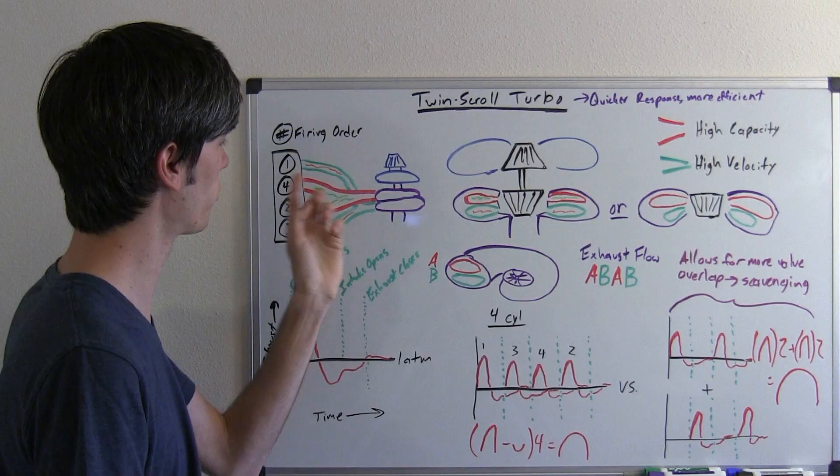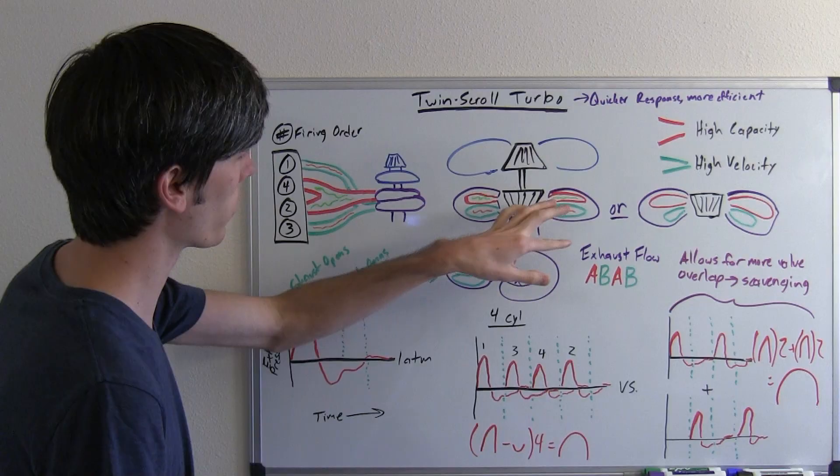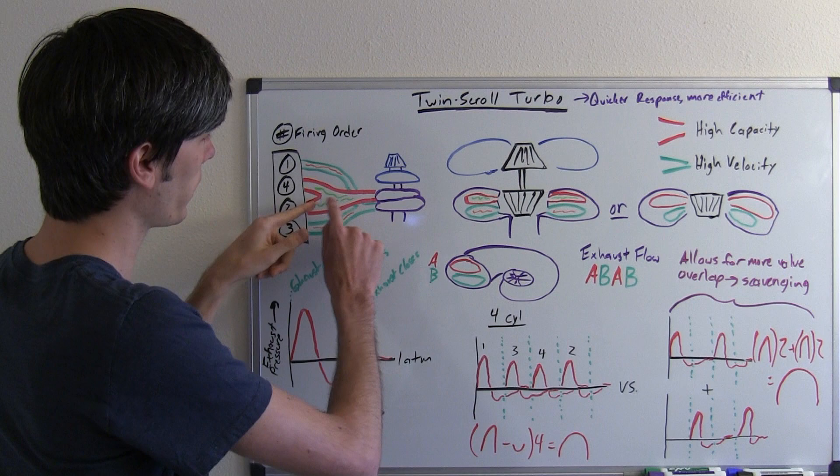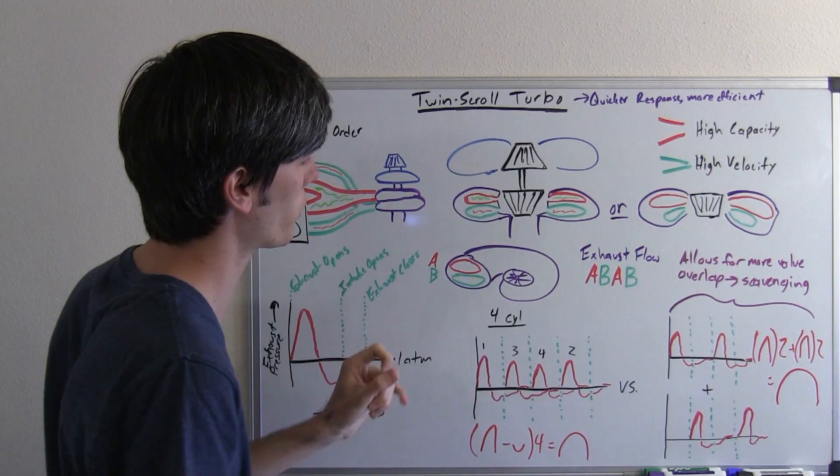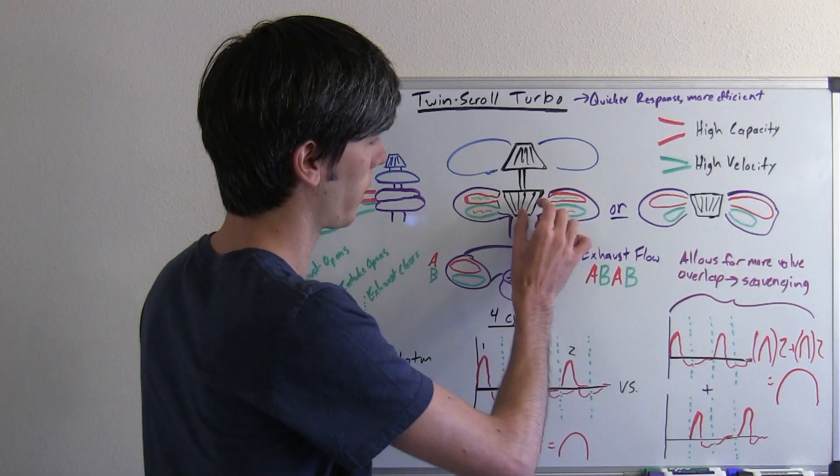So each of those corresponds to a different channel within this turbocharger. So you can see here I've got this green exhaust drawn for the red one and that goes in and it's in a separate channel completely than this orange exhaust here which I've got for cylinders 1 and 4. So as that goes in, it's got these two different channels which divides up that exhaust and the only time it mixes is once it hits the turbine. So then it'll come out together out of this turbocharger.